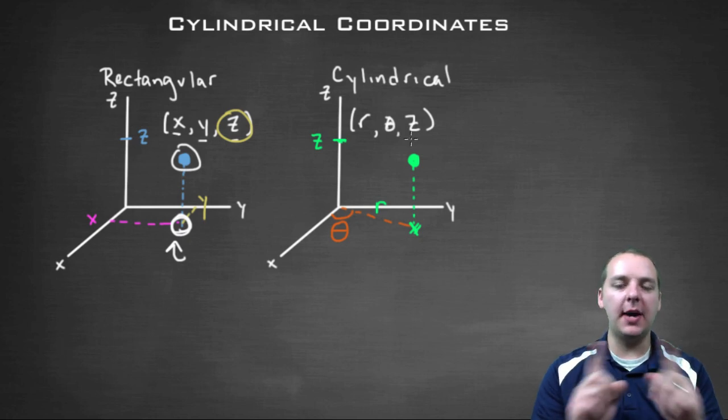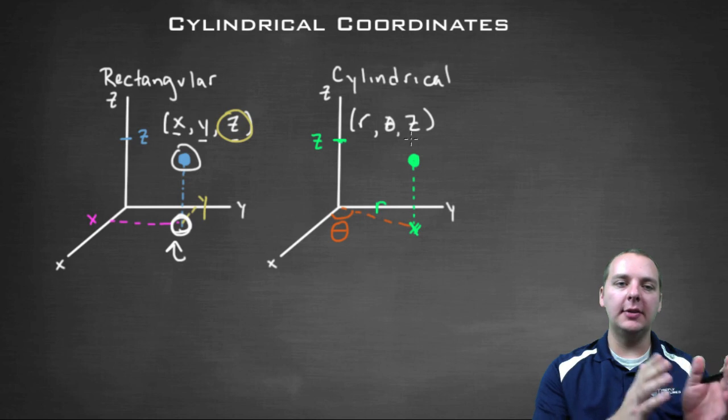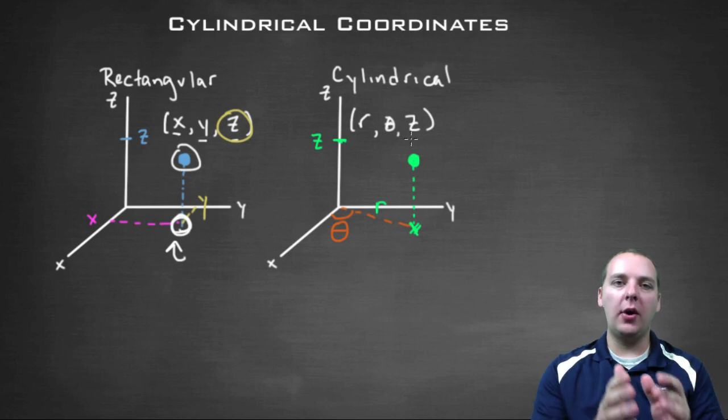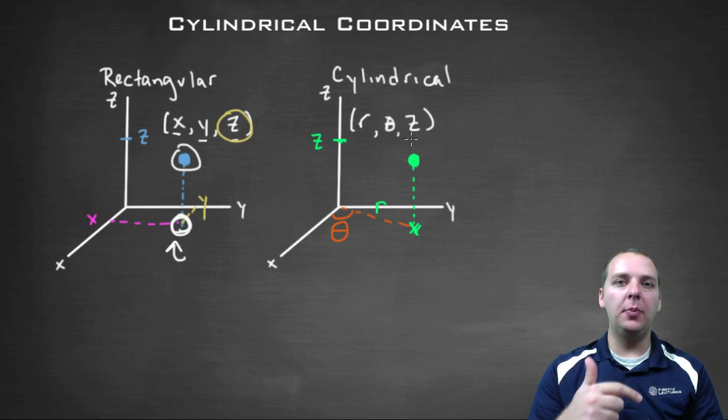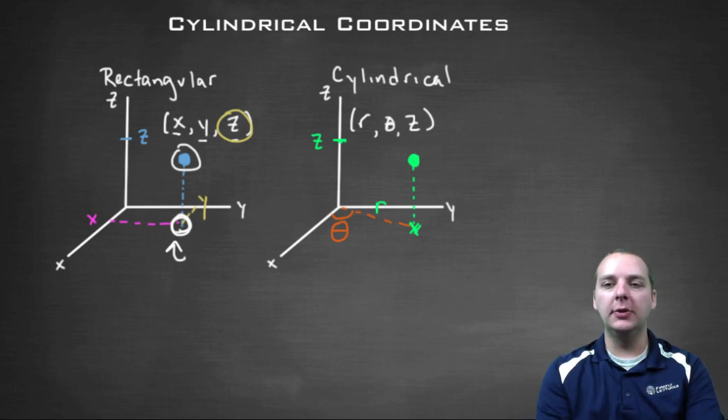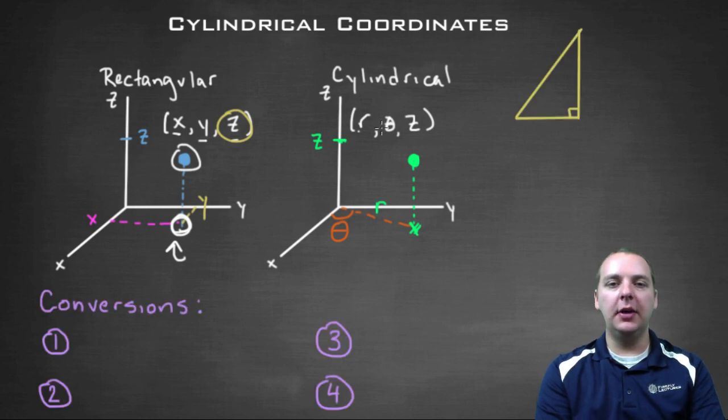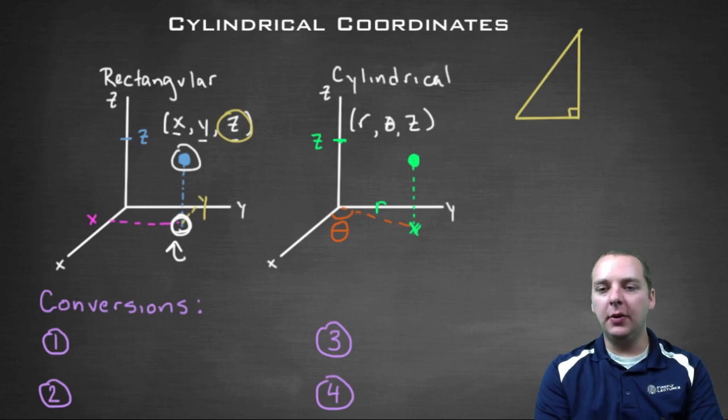So z and z match up. But now how do you convert from x and y to r and theta? Well a lot of this we can cheat a little bit, if you remember some conversions back from calculus two. So let's see if we can convert from x, y, and z to r, theta, and z. If you look in the x, y plane,